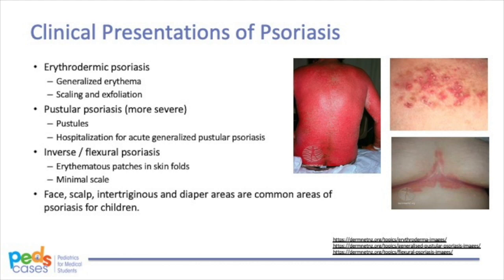Other types of psoriasis are less common compared with plaque and guttate psoriasis. Erythrodermic psoriasis is characterized by generalized erythema covering nearly the entire body surface area, with varying degrees of scaling and exfoliation. Pustular psoriasis is marked by pustules that can rupture and become infected; acute generalized pustular psoriasis requires hospitalization. Lastly, inverse or flexural psoriasis has erythematous plaques located in the skin folds with minimal scale. While pustular psoriasis is thankfully rare in children, inverse and flexural psoriasis is more common in the pediatric population compared with adults.